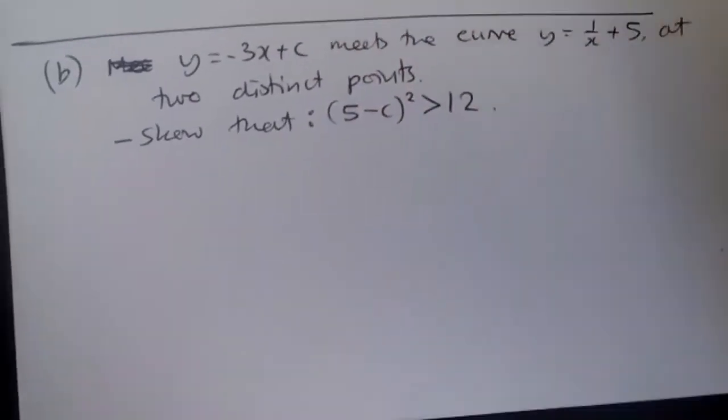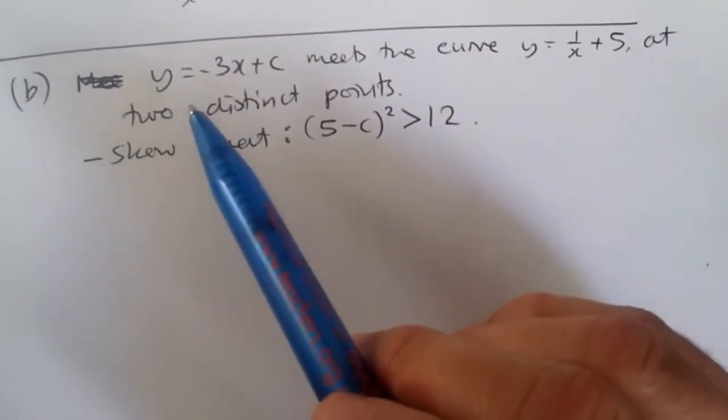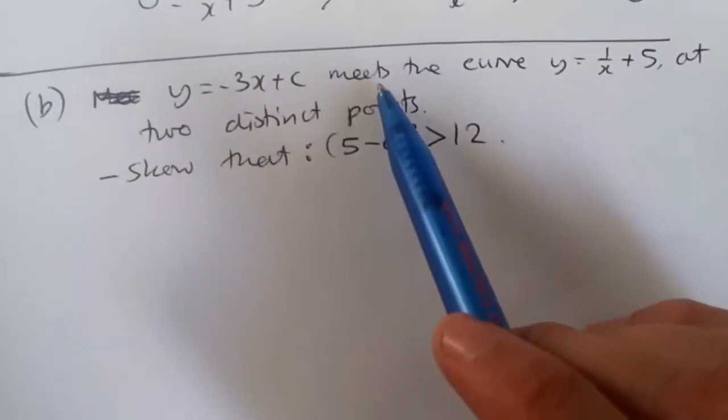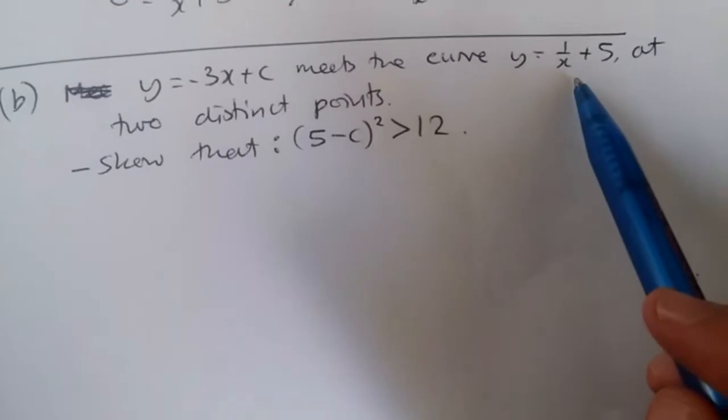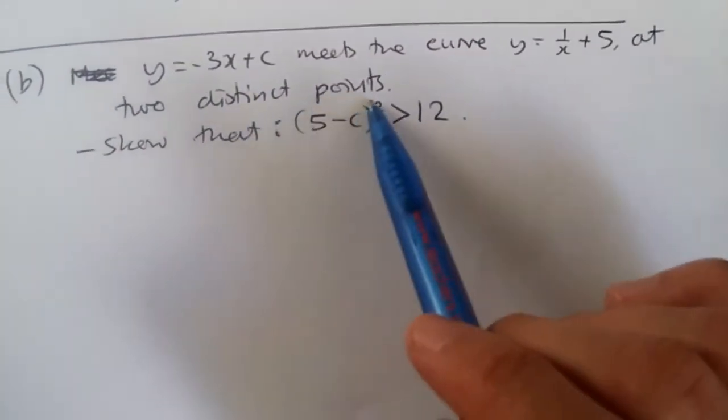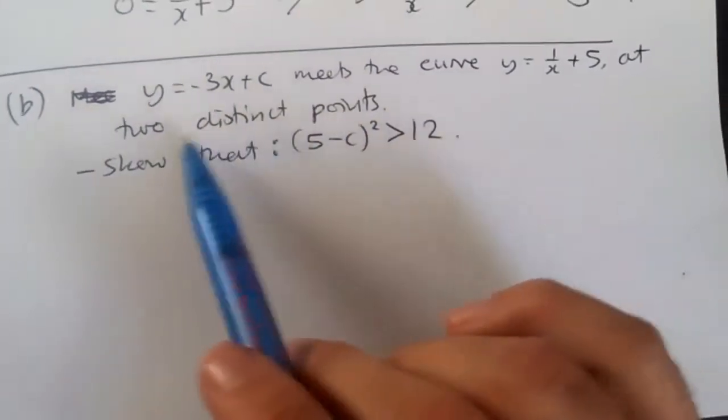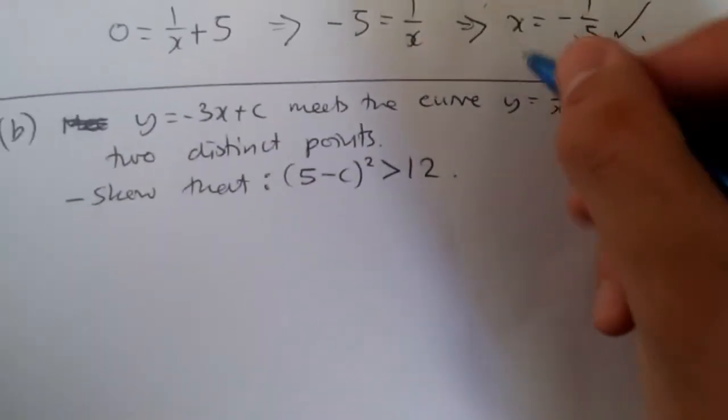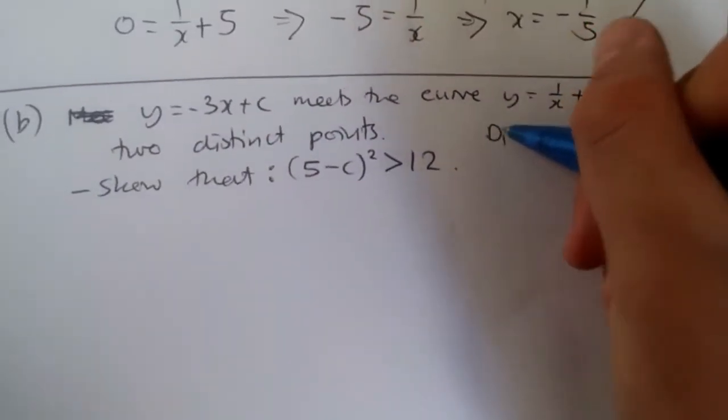Part b. So according to part b, we're given an equation, the same equation, and we're told that where c is a positive constant, this equation meets the curve y equals 1 over x plus 5 at two distinct points. Now, what this means, two distinct points, this means we're looking at two real points. So in other words, we need to consider the discriminant.